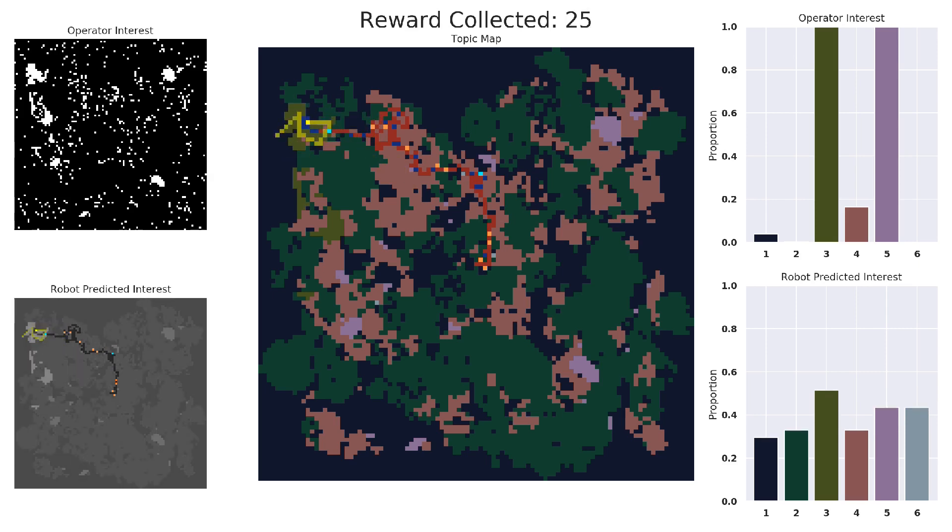However, the robot is not given this information. Instead, every 10 time steps, the robot can send an observation to the simulated scientist, who responds by saying whether it was interesting. When the robot receives this label, the corresponding pixel is highlighted bright blue if it was interesting, and bright orange if it was not.